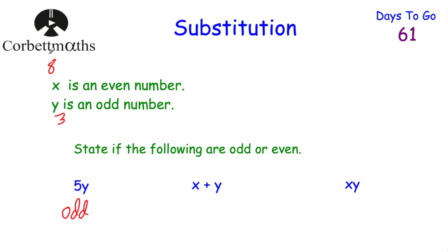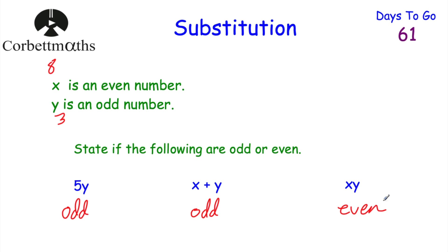For X plus Y: using our values, 8 plus 3 equals 11, which is odd. An even number plus an odd number always gives an odd result. For XY: 8 times 3 is 24 — that's even. Or 10 times 7 equals 70 — also even. No matter what even and odd numbers you choose, multiplying them always gives an even result.